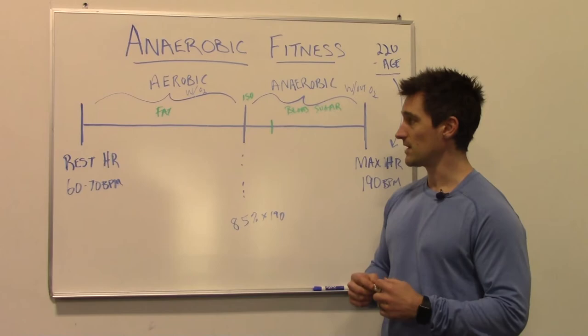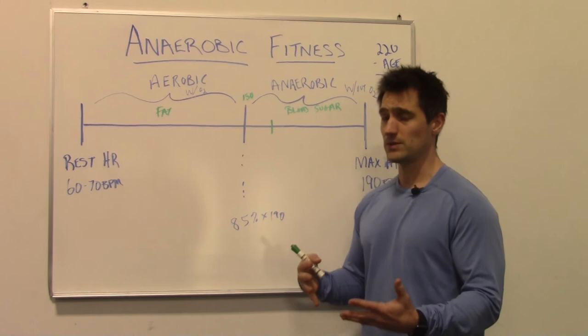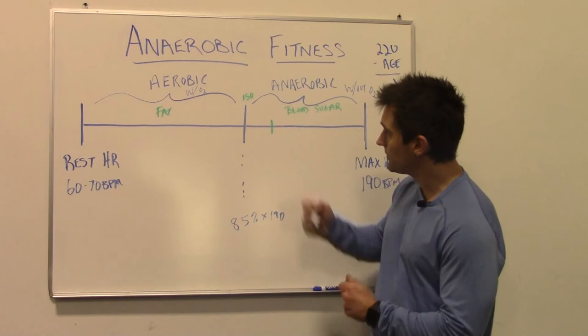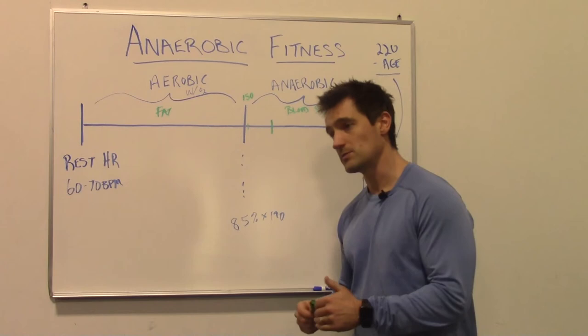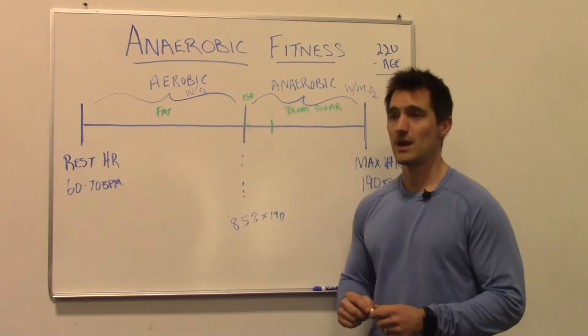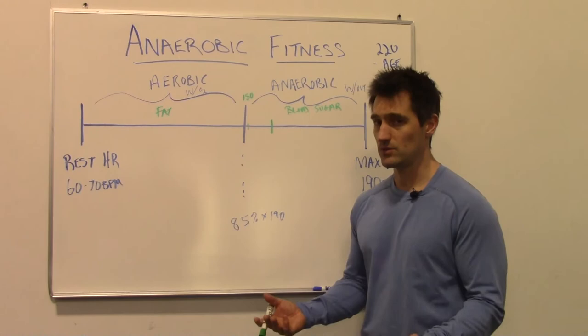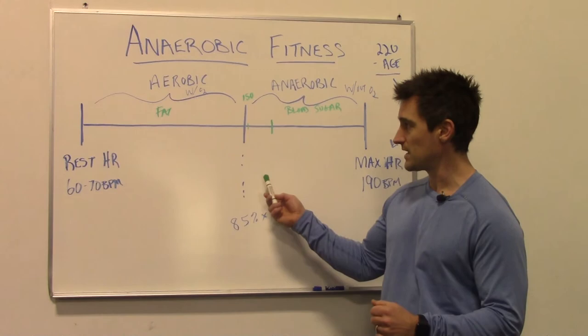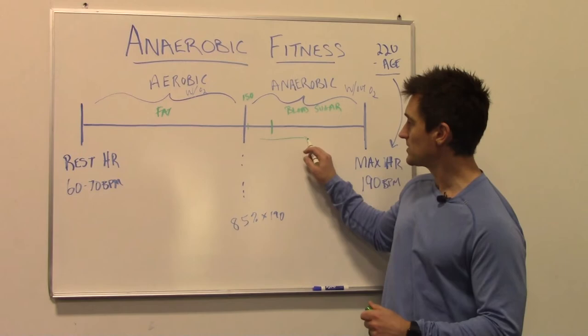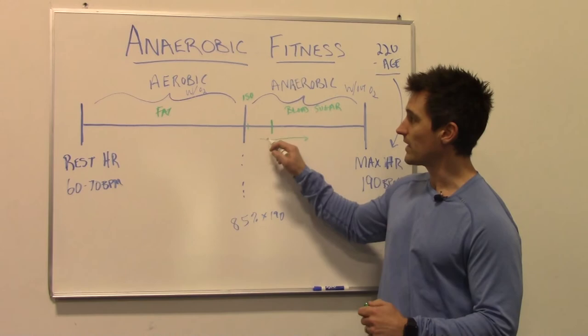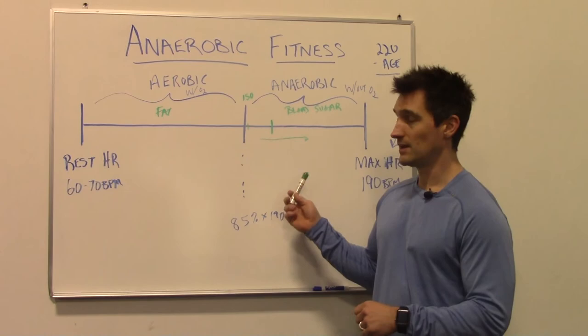I want you to always be challenging yourself. Say you're doing the sprints but you're only at 151 beats per minute because you're not really running very fast — that's like saying you did the bench press but only went up two and a half pounds and won't go up again for a month. That's not really challenging yourself. I don't want you to pass out doing sprints, and remember it's supposed to be around 85% intensity. But the harder you push yourself in that direction without passing out, the more likely you are to increase your anaerobic threshold.